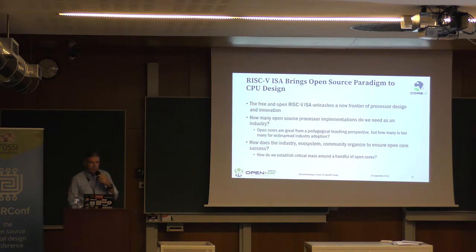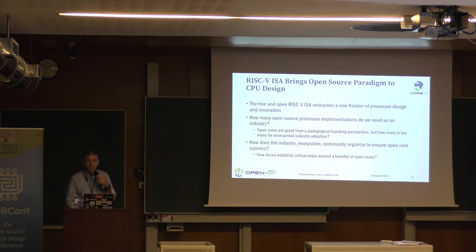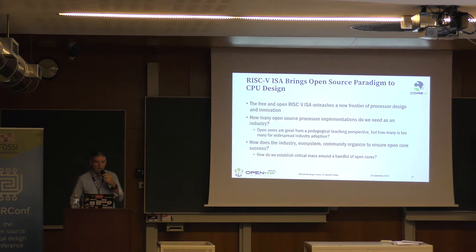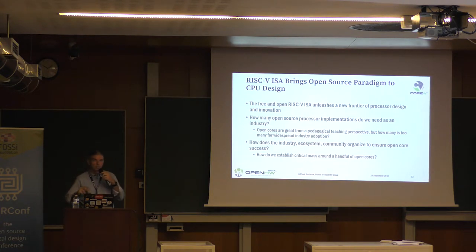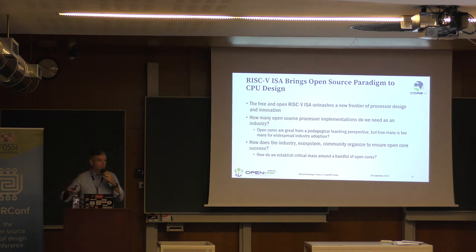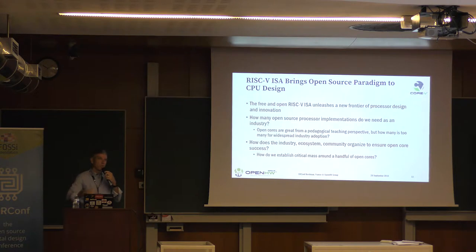RISC-V's free and open ISA means Frank and I could start a new processor company in his kitchen tomorrow — we don't have to talk to anybody, we just download the spec and start innovating. It's really unleashed a completely new frontier of innovation never seen before in the processor space. But the flip side is that the available resources throughout the ecosystem — people who work on toolchains, software porting, OS porting, even verification — are finite. The more cores we throw into that resource pool, the more we splinter it, making it harder to achieve critical mass.